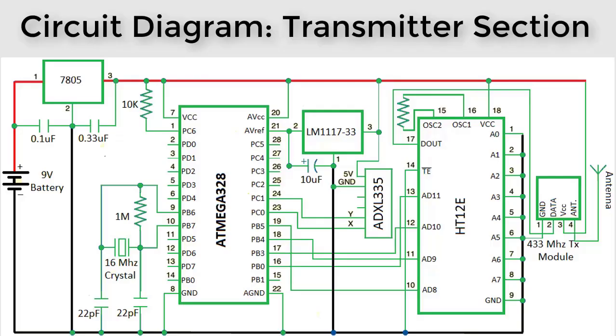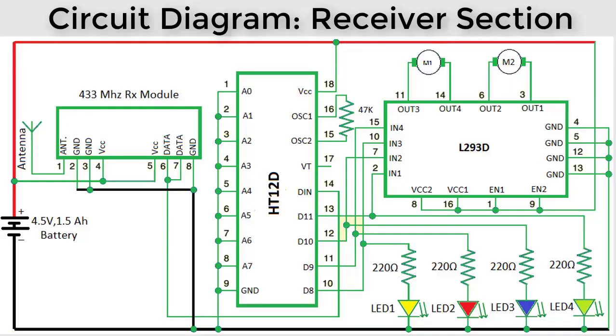This is the circuit diagram. We have used ATmega328 microcontroller, ADXL335 3-axis accelerometer, HT12E encoder. We've used 3.3 volt supply and also 7805 as a 5 volt supply. Simply make this connection like this.